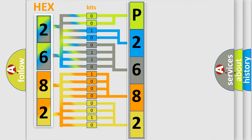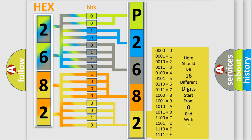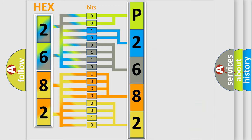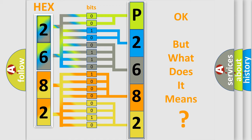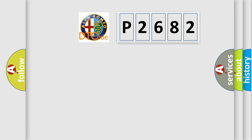A single byte conceals 256 possible combinations. We now know in what way the diagnostic tool translates the received information into a more comprehensible format. The number itself does not make sense to us if we cannot assign information about what it actually expresses. So, what does the Diagnostic Trouble Code P2682 interpret specifically?